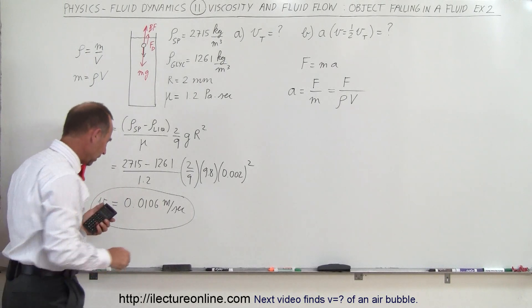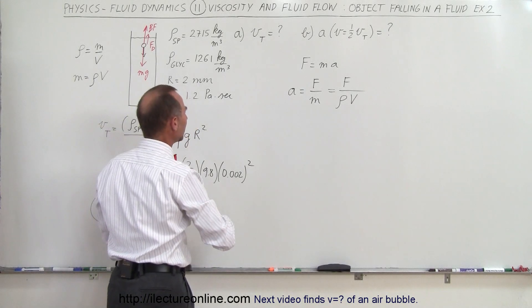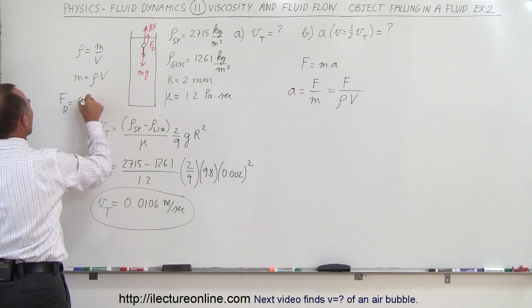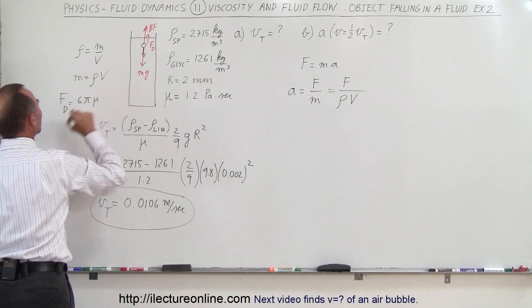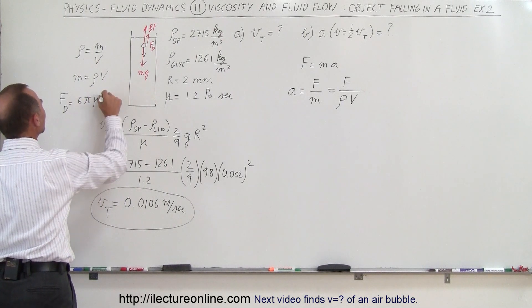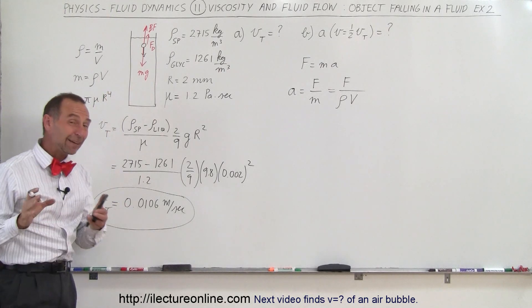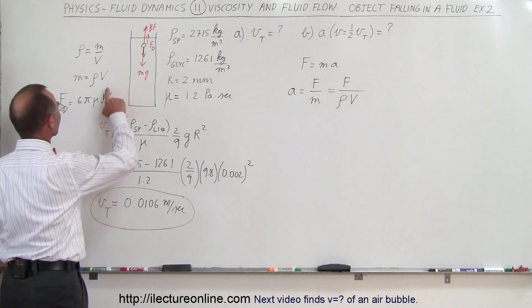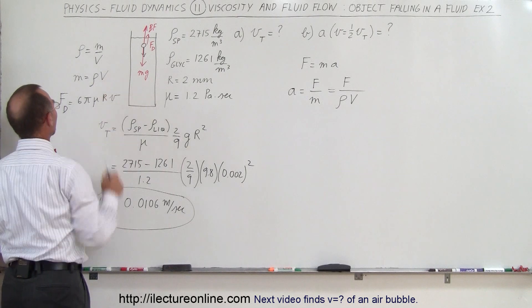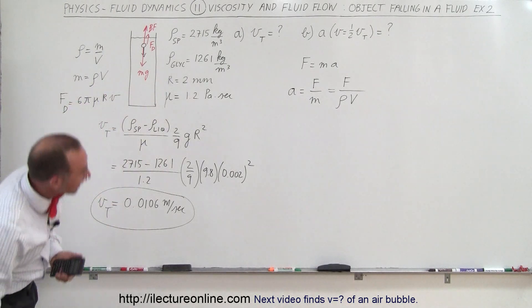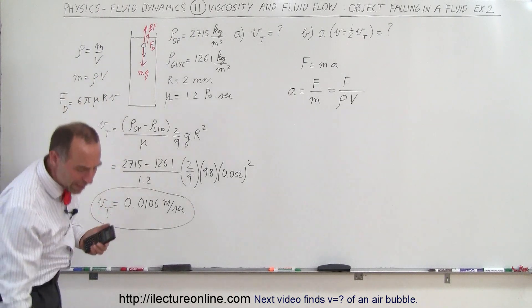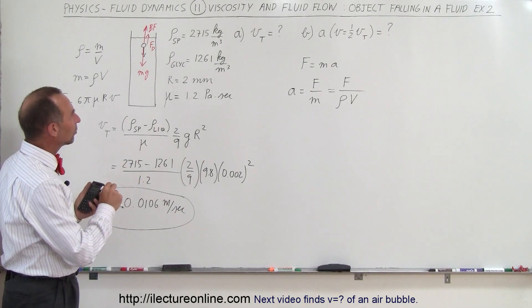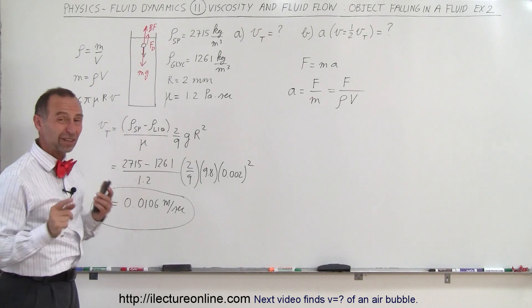The drag force from Stokes' law is equal to 6 pi times the coefficient of viscosity times the radius times the velocity. The buoyancy force equals the weight of the displaced liquid — that is, rho times V times g of the liquid. The gravitational force is simply mg.